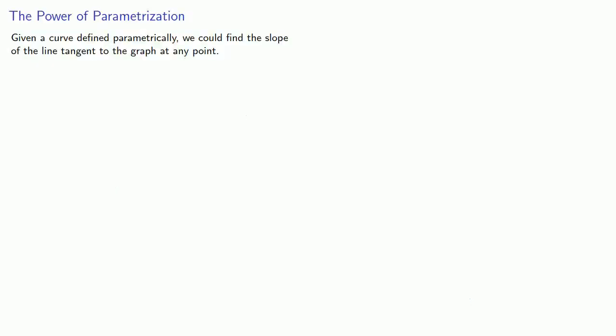And so given a curve defined parametrically, we could find the slope of the line tangent to the graph at any point, which is extremely useful. But it turns out this is about the least interesting thing we can do when we have our curve defined parametrically, because we can do so much more once we have those parametric equations.